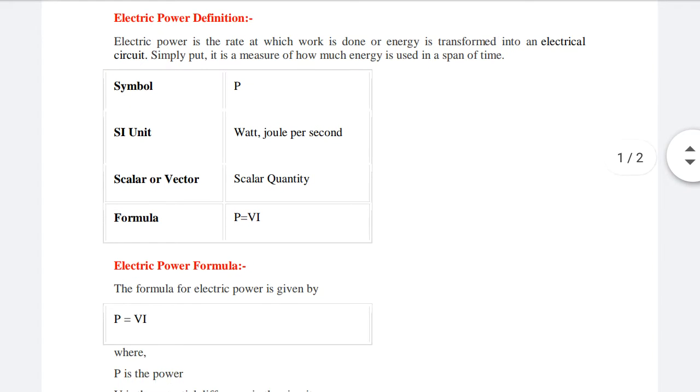Electric power is denoted by the symbol P. Electric power has a unit of watt or joule per second. Electric power is a scalar quantity. Its formula is P equals to V into I.